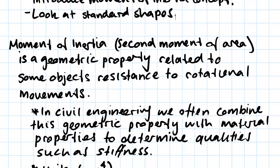We often combine this property, this moment of inertia property, with some material properties. So for instance, if the beam is made out of steel or concrete, they have different material properties. The combination of these two factors allows us to determine quantities such as stiffness, which is important when we're working out deflections and the strength of members.